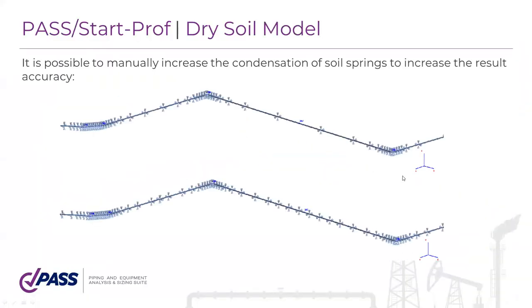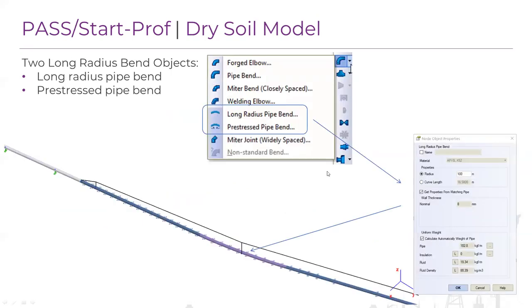We also have options to change the number of springs that StartProf places to model the soil, giving greater accuracy of analysis. Another feature is long radius bends — a special bend object used in pipelines. We have two types: the regular long radius bend, and the pre-stressed long radius bend. The diameter of such bends can be 100 diameters and greater.